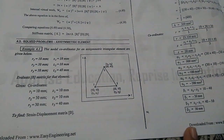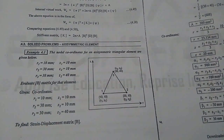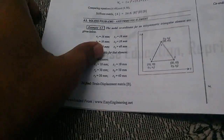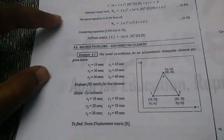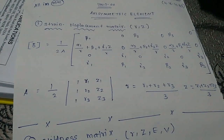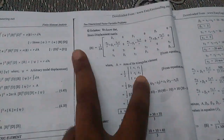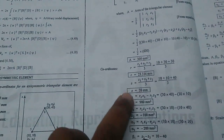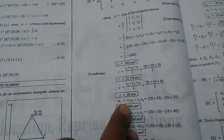Unit 4 is the Axisymmetric Element. This problem is about the axisymmetric element. First, the nodal coordinates for the axisymmetric triangular element are given below. Let's take a look at how alpha can be calculated using this formula.